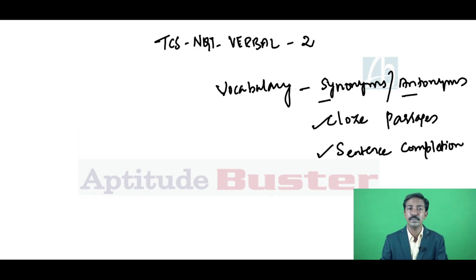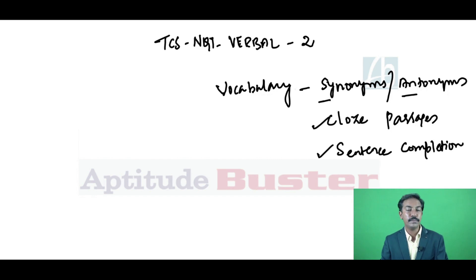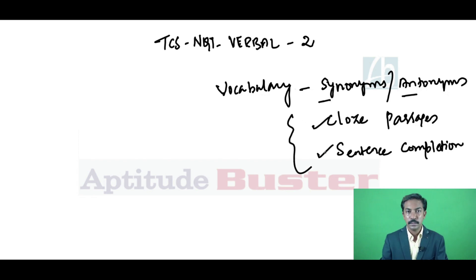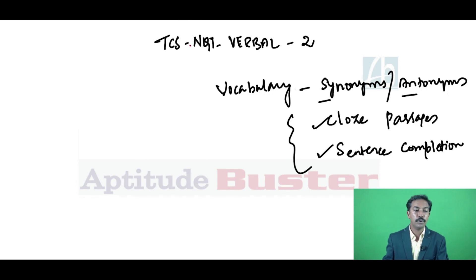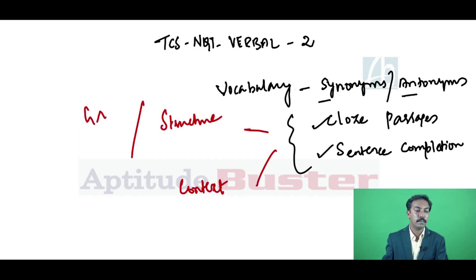It is possible to answer a couple of questions, if not all, through the help of context. Thereby, I prefer to dwell on these two question types — cloze passages and sentence completion — under the belief that even if your vocabulary is limited, it is possible to answer a few more questions, say 60 to 70 percent. Through these two question types, you would get questions that test you on both structure and context — in other words, grammar and vocabulary.